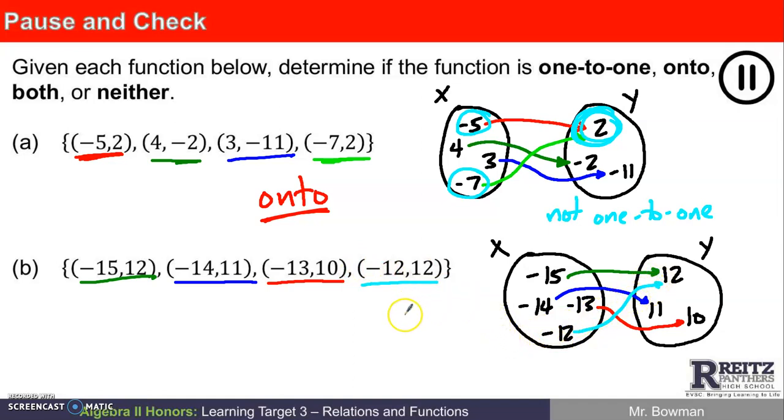Well, I think we have a similar issue in this example to the first one in that this function is not 1 to 1. Because this value has two different input values. So it's not 1 to 1. It's onto. And I guess the best description here would be that it is onto.